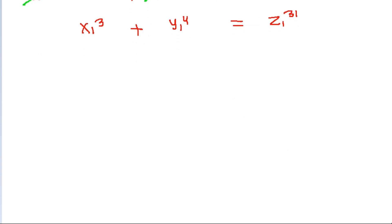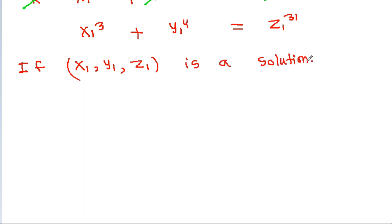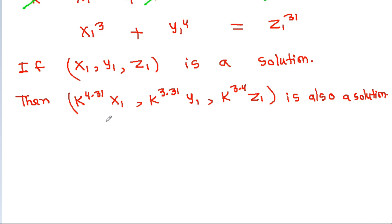That means if (x1, y1, g1) is a solution, then (k^(4×31) · x1, k^(3×31) · y1, k^(3×4) · g1) is also a solution. We can put any value for k, so if we find even one solution (x1, y1, g1), the equation will have infinitely many solutions.